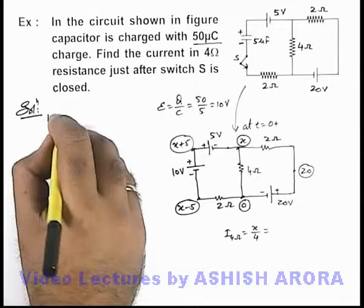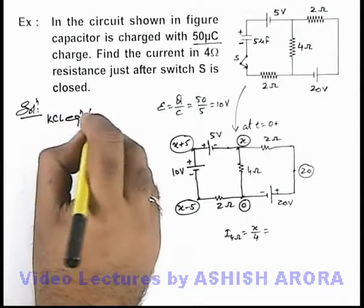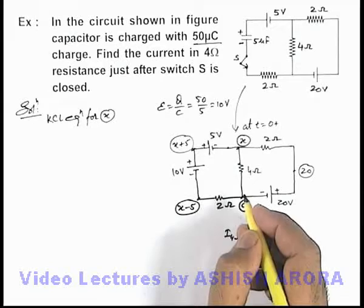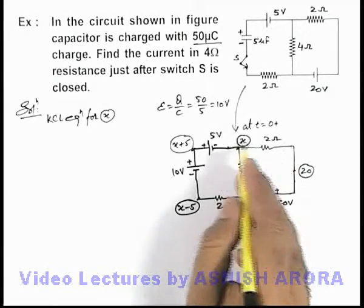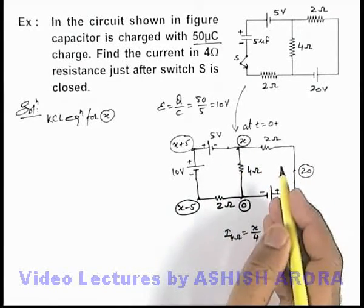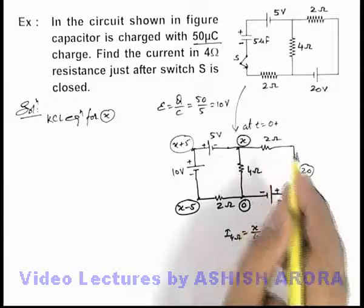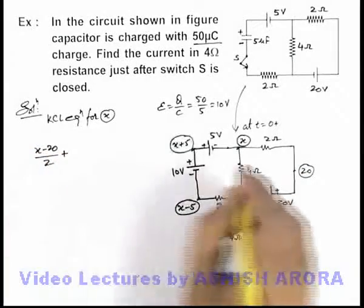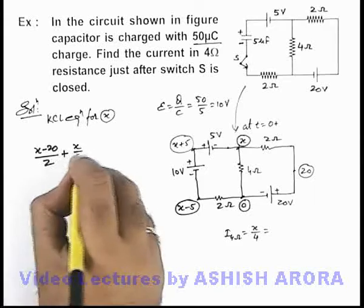So we can write here KCL equation for x. Then there are 3 branches connected to x, so outgoing current sum we just need to equate to zero. So current flowing in this direction will be x minus 20 by 2, plus current flowing here will be x by 4.